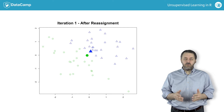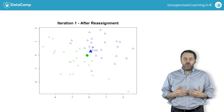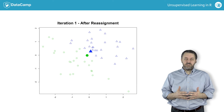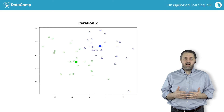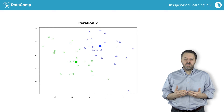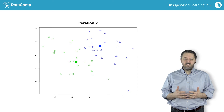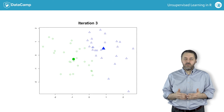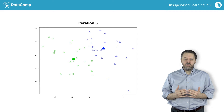This completes one iteration of the k-means algorithm. The k-means algorithm will finish when no points change assignment. In this case, many points change cluster assignment, so another iteration will be completed. Here we see the k-means algorithm after completion of two iterations. New cluster centers have been calculated and each observation has been assigned to the cluster of the nearest center. And here's the algorithm after completion of three iterations. Again, some points have changed cluster assignments, so another iteration of the algorithm will be completed.